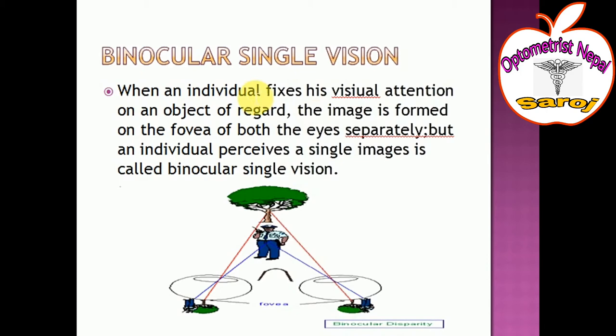To clarify this definition: we all have two eyes, and each eye contains a fovea. When we see an object, the image focuses on the fovea of both the right and left eye. These two images are then perceived as a single image by the mental impression of the visual cortex of the occipital lobe — this is called binocular single vision.